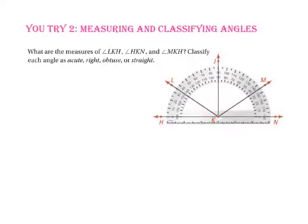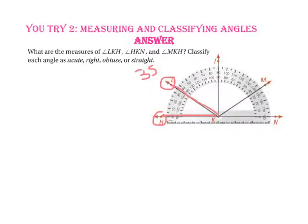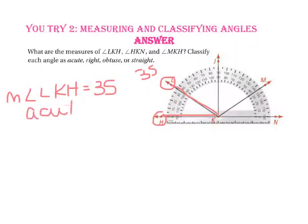Pause the video and do you try number 2. Let's check your answers. Looking at angle LKH — ray KH goes through 0, and ray KL goes through 35 on the outside ring. So the measure of angle LKH is 35. Since that is less than 90 degrees but more than 0, it is an acute angle.